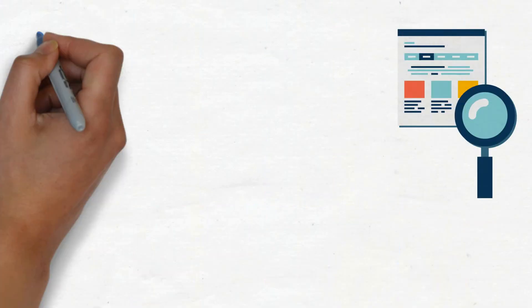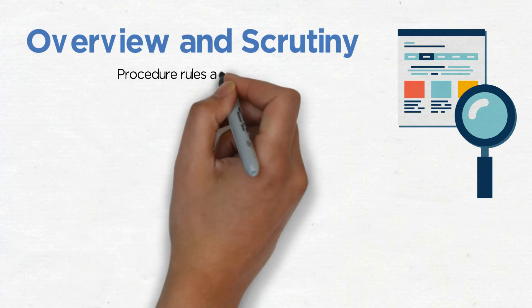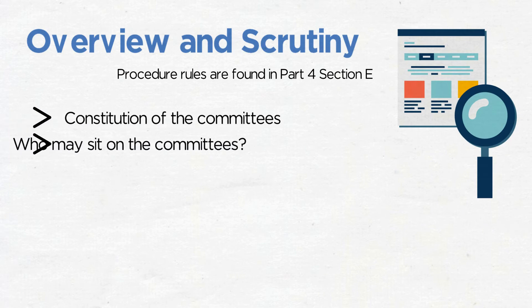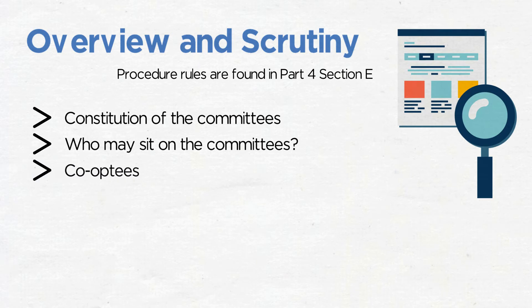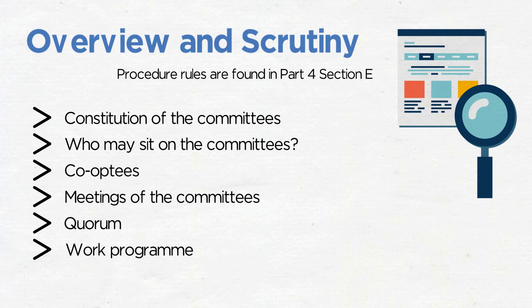Overview and scrutiny. You may have seen the separate training session on the whole topic of overview and scrutiny, and we recommend you take some time to watch this even if you don't have a seat on a scrutiny committee at this time. The overview and scrutiny procedurals are found in Part 4, Section E of the Constitution, covering: constitution of the overview and scrutiny committees, who may sit on overview and scrutiny committees, co-optees, meetings of the overview and scrutiny committees, quorum, work programme, and agenda items. There are many other aspects to review — take a look at the procedure rules and ask Michelle Sachs or Lorraine Bush any questions you have.